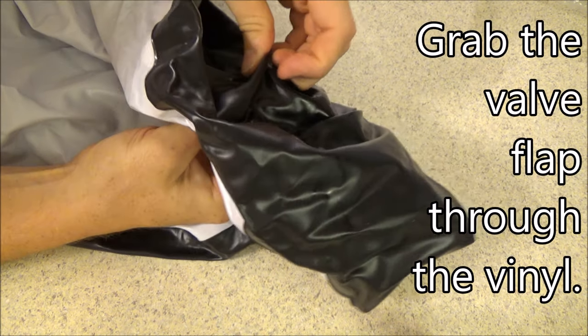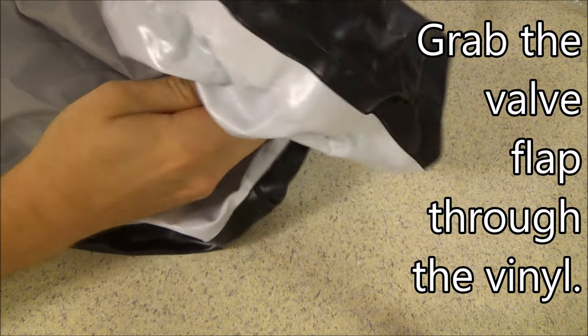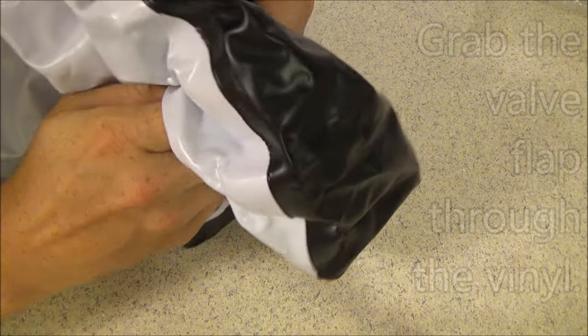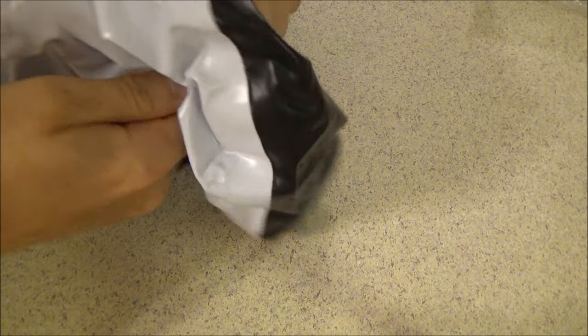You should now be able to find the internal side of the valve through the vinyl of the toy. Grab the flapper from inside the toy. Twist, wiggle, and pull on the flapper until it breaks free.